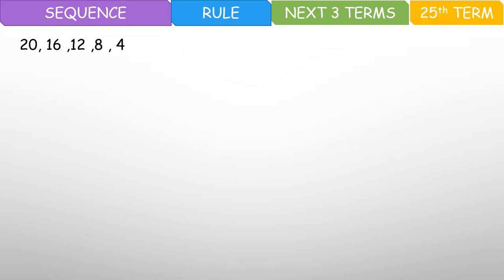Tignan natin yung sequence na to. That is 20, 16, 12, 8, 4. Now ngayon, hindi ka na nagdadagdag — nagbabawas ka na. So kung titignan mo, 20 ay nagiging 16 — minus 4. 16 nagiging 12 — minus 4 ulit. Minus 4 ulit, that is 8. Minus 4 ulit, that is 4. So minus 4. Ibig sabihin, yung minus 4 — yun na yung itabi natin sa n.